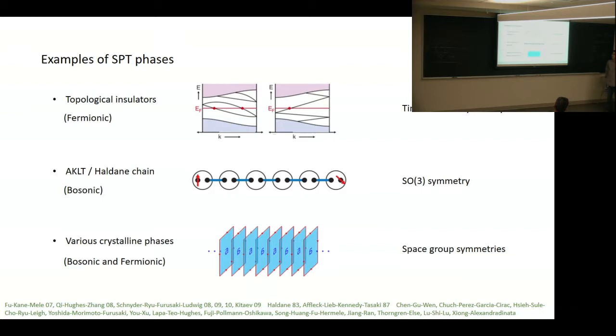There are many familiar examples of SPT phases. For instance, in the fermionic case, we have topological insulators, topological superconductors. In the bosonic case, we have this famous 1D AKLT chain, which has SO3. There are also many Floquet SPT phases, which exist in both bosonic and fermionic phases.